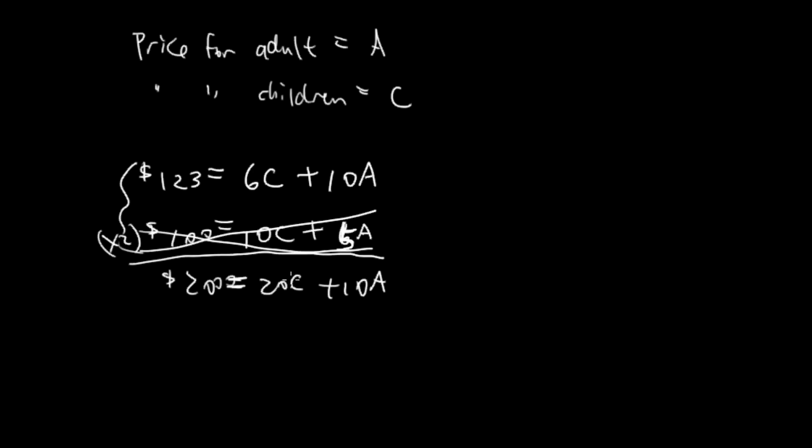It will be easier if this is negative instead, so we don't do any subtracting. I'm actually gonna take this times negative two, so it's negative 200 equals negative 20C minus 10A. Now I just add the two.